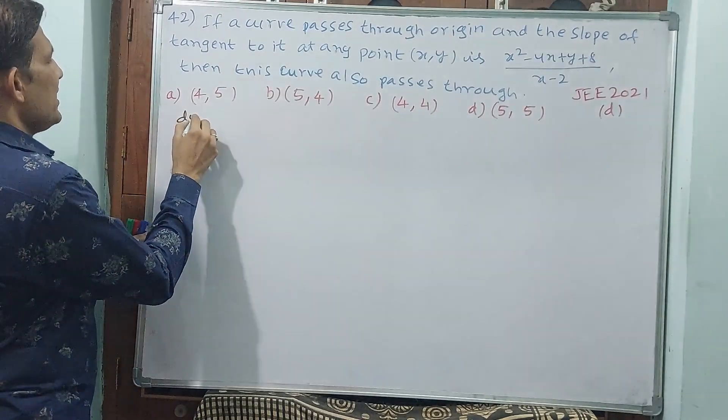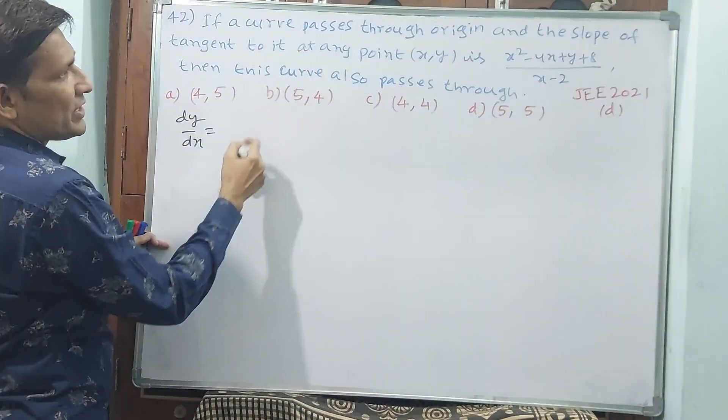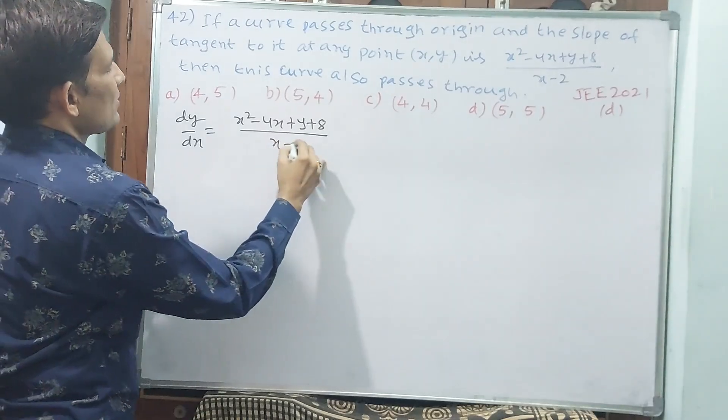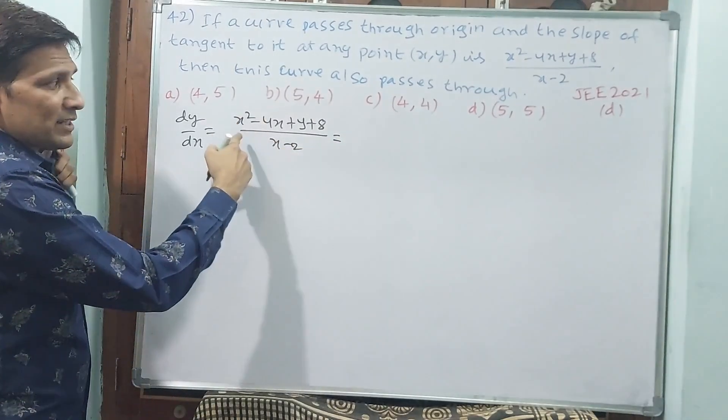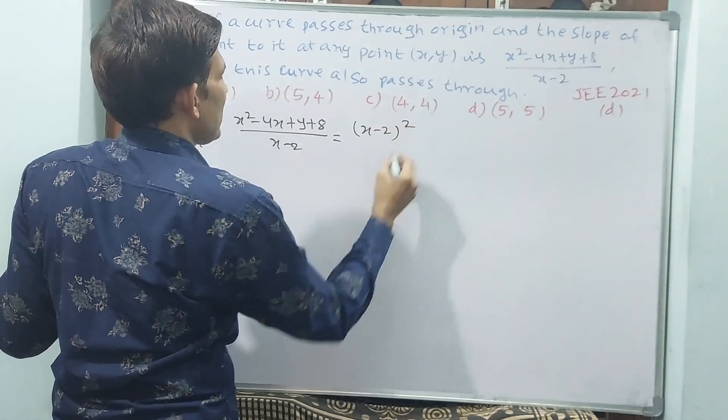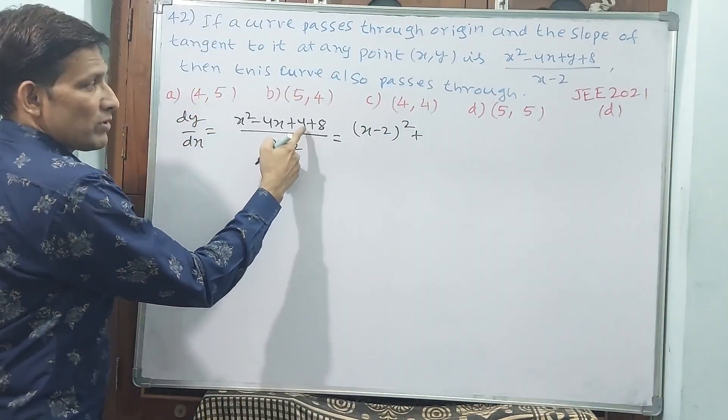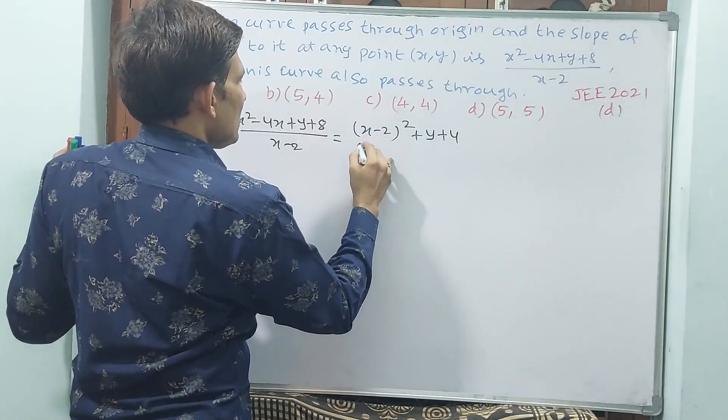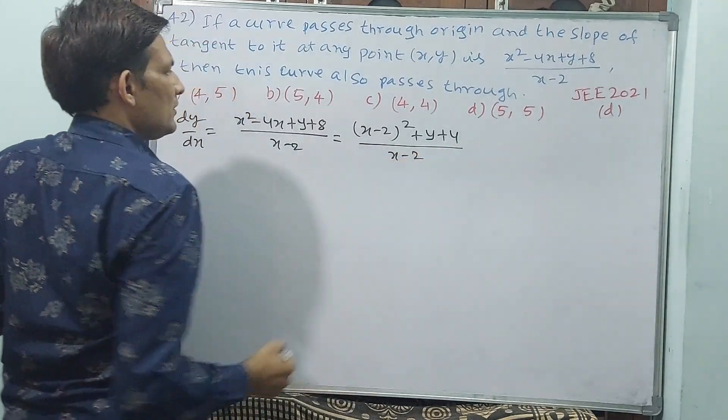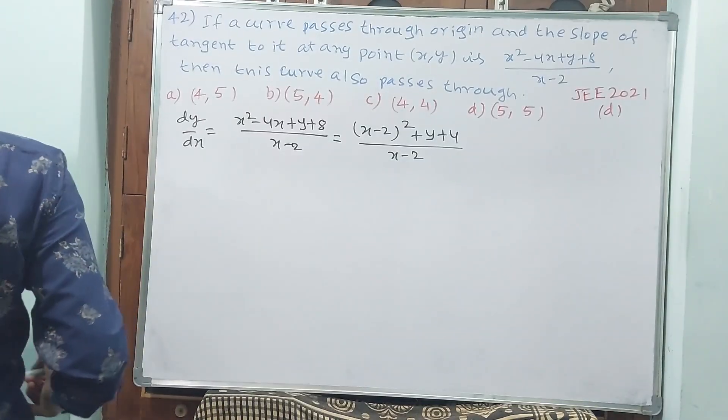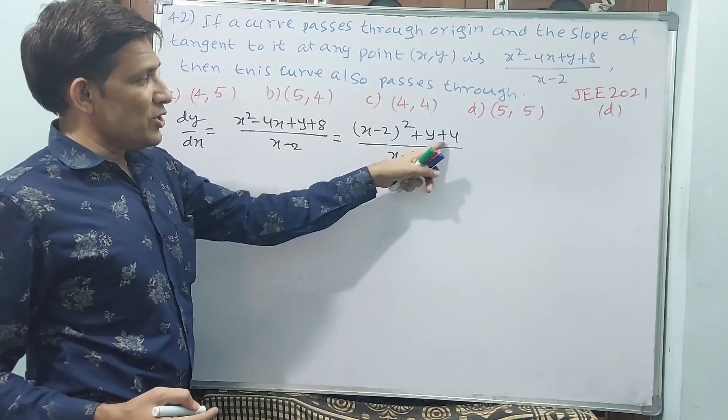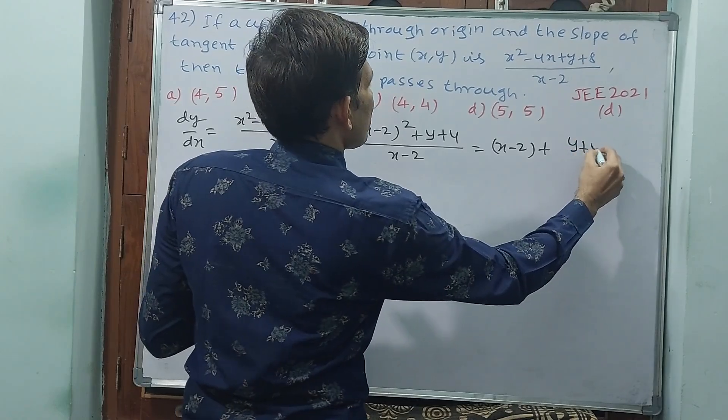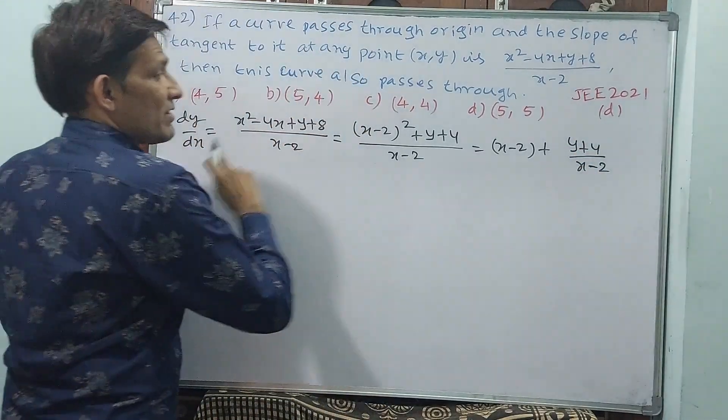We should write like this. dy/dx is the tangent, which equals (x² - 4x + y + 8)/(x - 2). It is looking like (x - 2)². (x - 2)² plus y plus 8. For (x - 2)², 4 will come, so plus 4. Divide it by x - 2. That means (x - 2) + (y + 4)/(x - 2). This is dy/dx. Don't forget.